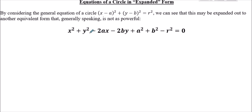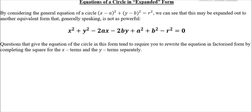Generally speaking, the expanded form is not as useful, but examiners might throw it in now and again. What you need to do is complete the square on both the x-terms and the y-terms to get it back to the bracket form. Questions that give the equation in expanded form tend to require you to rewrite it in factorised form by completing the square for the x-terms and y-terms separately.